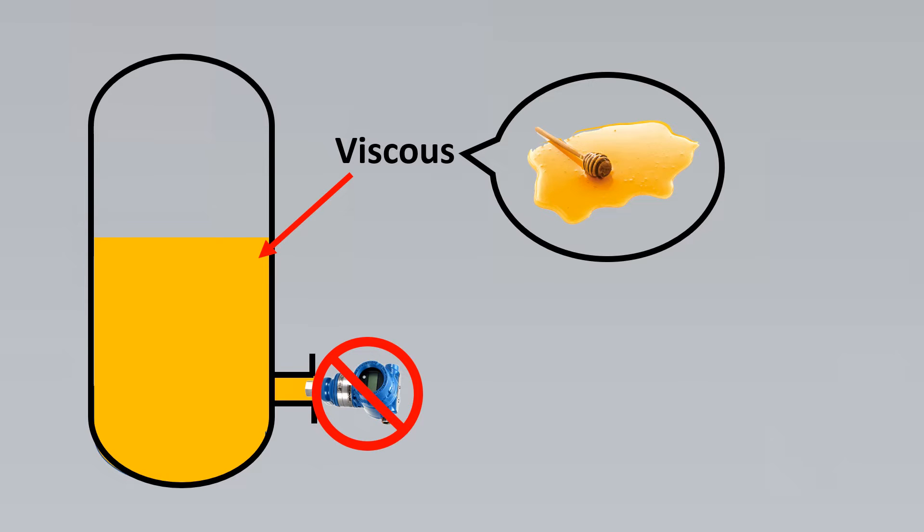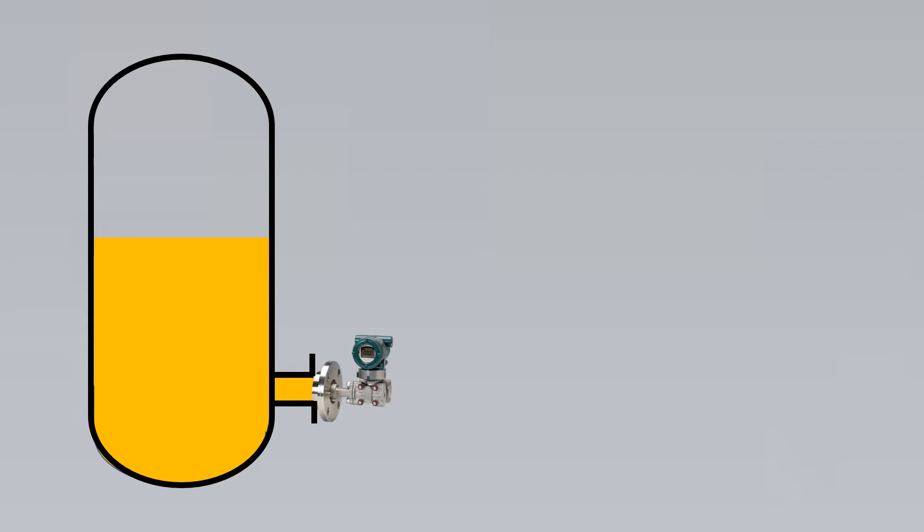When the fluid is clogging, we usually go for diaphragm seal systems. So we used a diaphragm seal pressure transmitter to measure the pressure so that there is no fluid clogging the tubes or the pressure transmitter sensing element.